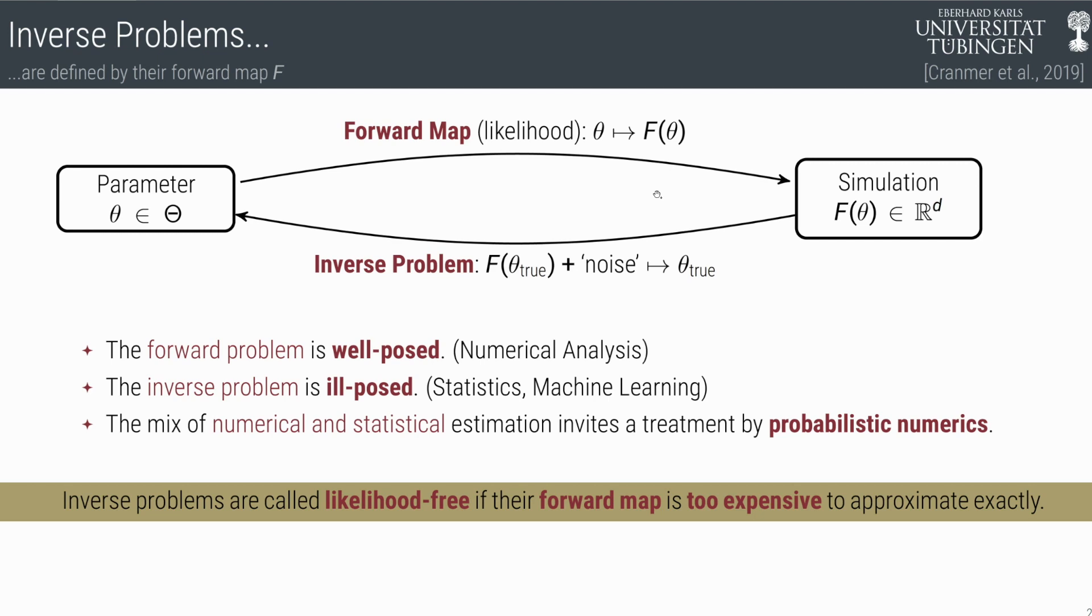The forward model map is just computing the simulation. And the inverse map is recovering a true parameter θ_true from the simulation f(θ_true) plus some noise.